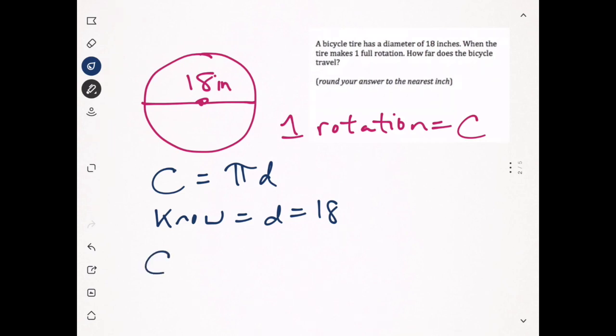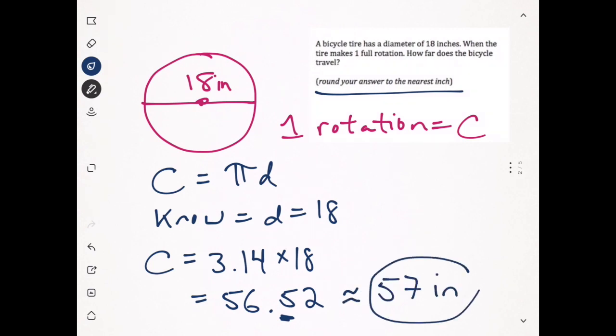Circumference equals 3.14 times 18. You can punch that into your calculator. That gives us 56.52, but it says round my answer to the nearest inch. Because this is 56.5, I'm going to round that up to 57 inches. So this tire with a diameter of 18 inches, when it turns one time, travels 57 inches on the ground.